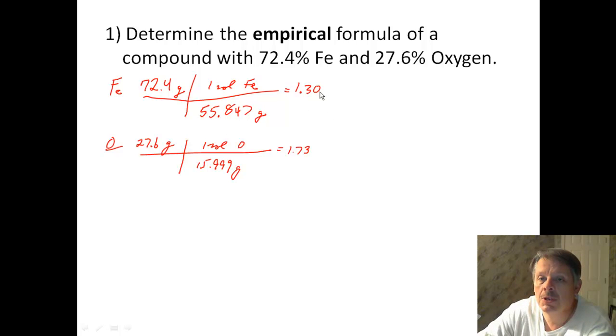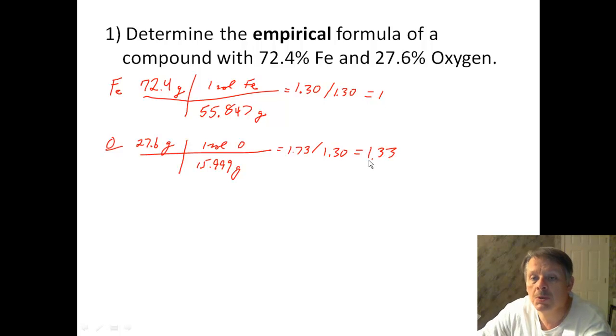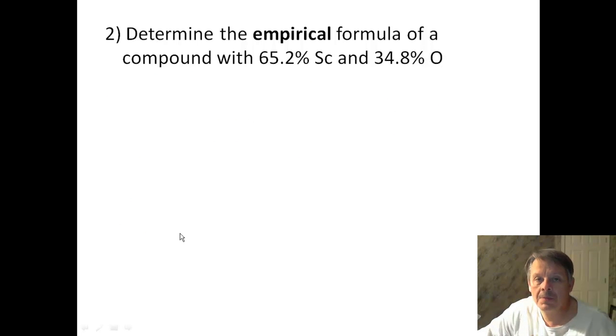Our smallest one here is clearly 1.30. So I divide them both by 1.30. And then here I get a 1 and here I get a 1.333. Alright, and then what we're supposed to do is we're supposed to multiply until we come up with a whole number. But when I look at these, the number I have to multiply by is 3. Because that will give me a 3 to 4 ratio and it will get rid of the decimals. Alright, so what my empirical formula is is Fe3O4.